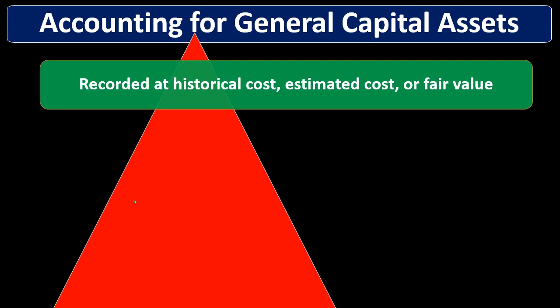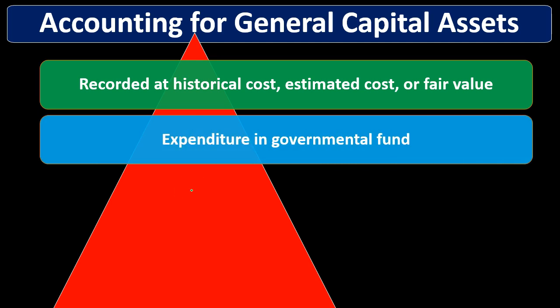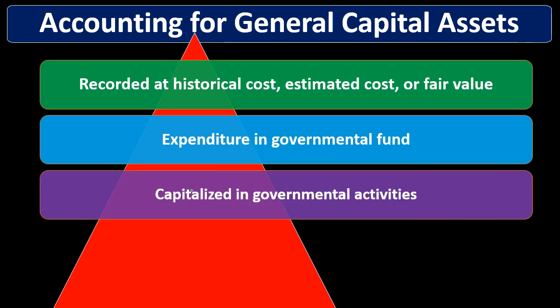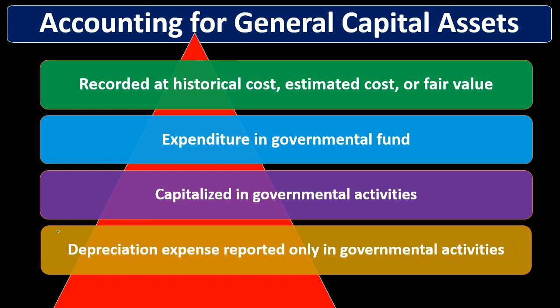Capital assets are recorded at historical cost, estimated cost, or fair value. When recording in governmental funds — the general fund, special revenue funds, and capital projects fund — we record these as expenditures, not as assets. This is the modified accrual method. On the governmental activity level, they are capitalized in the normal way we would expect for long-term assets, and any related depreciation is recorded at that government-wide level.